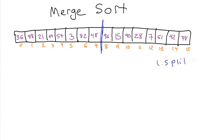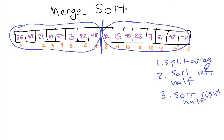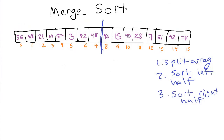Splitting the array is the first step. Step two is to sort the left half. Step three is to sort the right half. Both of those are done recursively — we're going to use the same process we're using for the overall array to sort the sub-halves as well. Then once both halves are sorted, all we have to do is merge them back together, which we're going to talk about in detail.